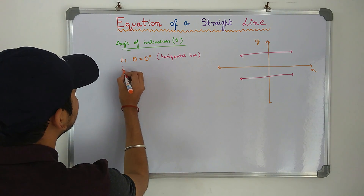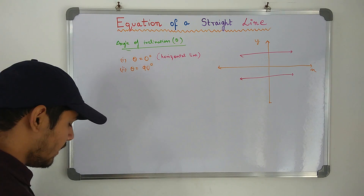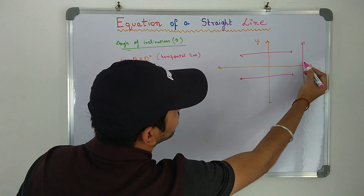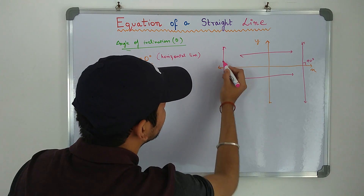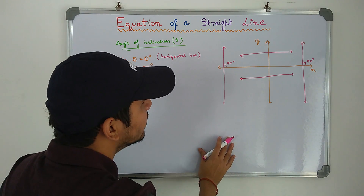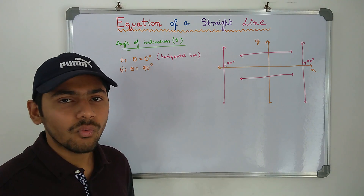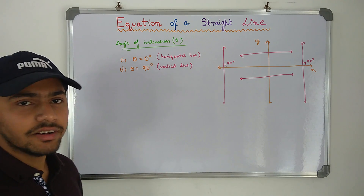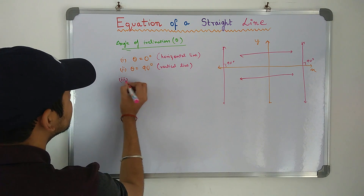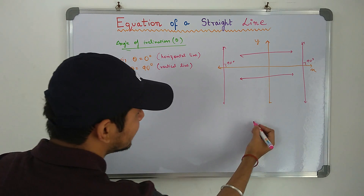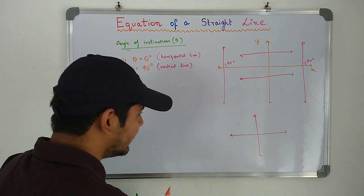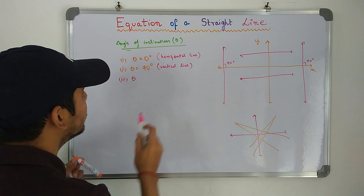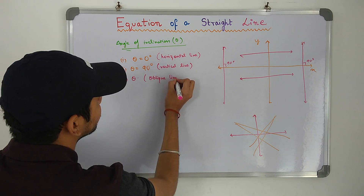Number two: when theta is equal to 90 degrees, we get lines perpendicular to the x-axis — these are parallel to the y-axis and are called vertical lines. Number three: any angle of inclination other than zero degrees and 90 degrees gives an oblique line. That means any line which is not horizontal and not vertical is called an oblique line.